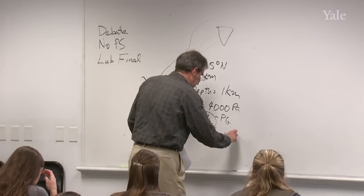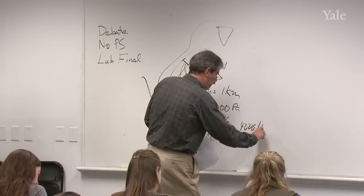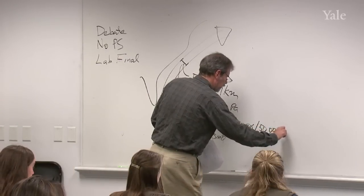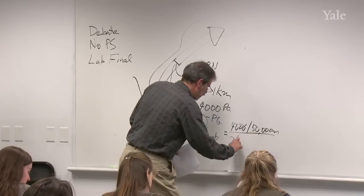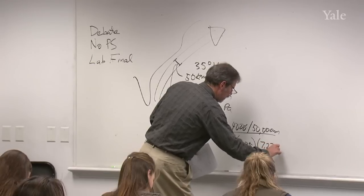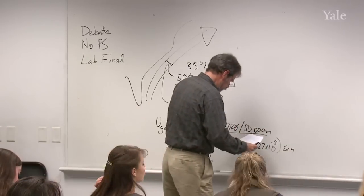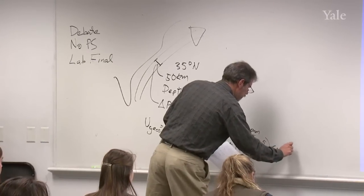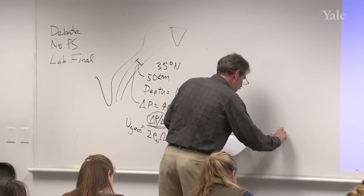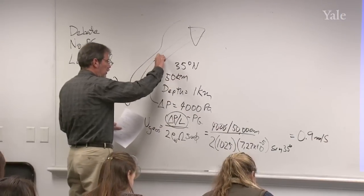What goes into this is a delta p of 4000 pascals, a length of 50 kilometers, which is 50,000 meters, times 2, the density of seawater is about 1,025. Rotation rate of the Earth is 7.27 times 10 to the minus 5. And the sine of the latitude is the sine of 35 degrees. When you put in all those numbers, I got 0.9 meters per second for the speed of flow in the Gulf Stream.